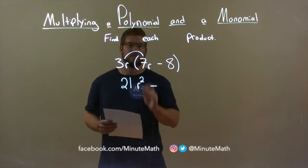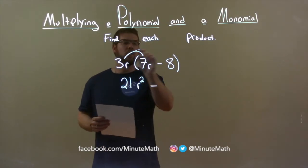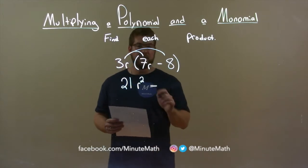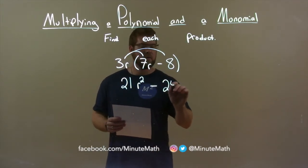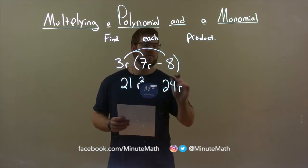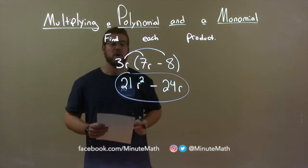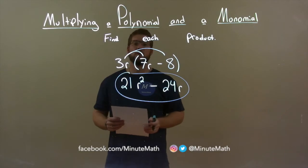Subtraction separates the two terms, and 3R times 8 is our next task. 3 times 8 is 24, and the R comes down because there's no other R there. Our final answer now is 21R-squared minus 24R.